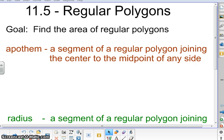Alright, so 11.5 is all about regular polygons. The goal is to find the area of regular polygons. The main two parts of finding area of regular polygons are the apothem and the radius. So I want to talk a little bit about those right now.